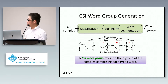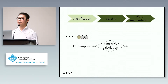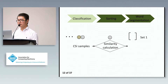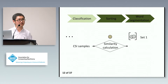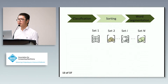Unlike existing methods, our attack utilizes three very important steps to infer keystrokes. First is CSI word group generation, which converts CSI samples into groups corresponding to each typed word. As shown in this figure, four CSI samples form a CSI word group, and it involves three steps: classification, sorting, and word segmentation. For classification, we calculate the distance between CSI samples to denote their similarity, using a circle to denote each CSI sample. A very small distance between CSI samples means they may come from typing the same key and will be put in the same set; if their distance is large, they may come from a different key and will be put into a new set. The outcome of classification is multiple sets, each consisting of similar CSI samples.